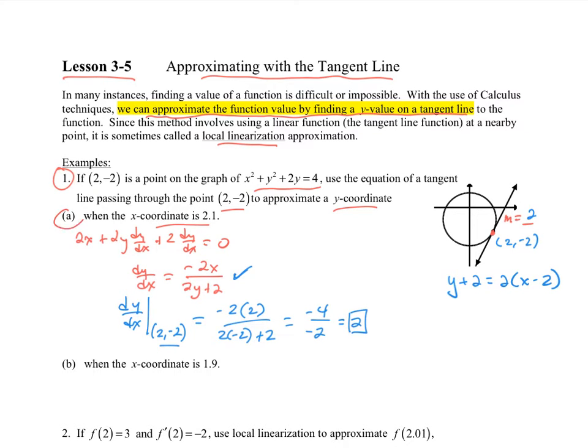Now we want to make sure we answer this question. We want to approximate this function when the x-coordinate is 2.1. So if I go y + 2 = 2(2.1 - 2), I'm plugging in the 2.1 for my x-value.